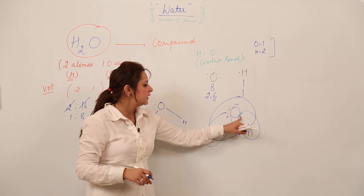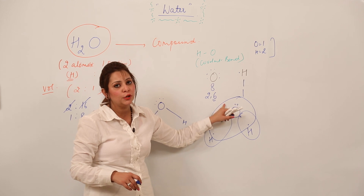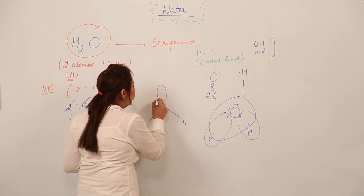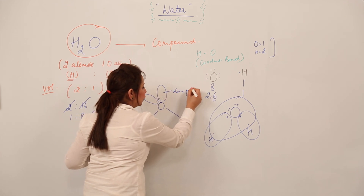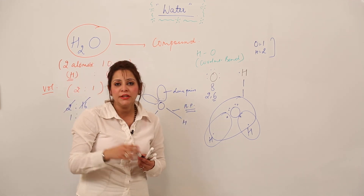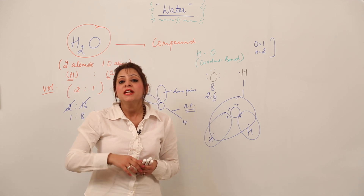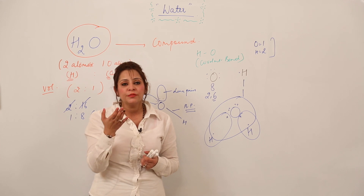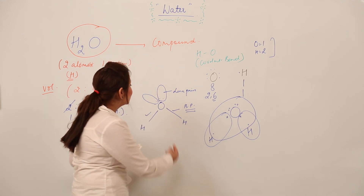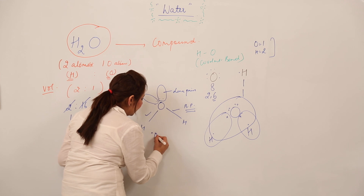By forming these bonds, each hydrogen acquires a duplet and becomes stable — 2 electrons each. Oxygen contributes 2 electrons to bond formation; 2 pairs are left that do not participate — these are called lone pairs. So oxygen has 2 lone pairs and 2 bond pairs. Due to lone pair–lone pair and lone pair–bond pair repulsions (lone pair–lone pair repulsion being the maximum), the geometry gets distorted and is called bent geometry.